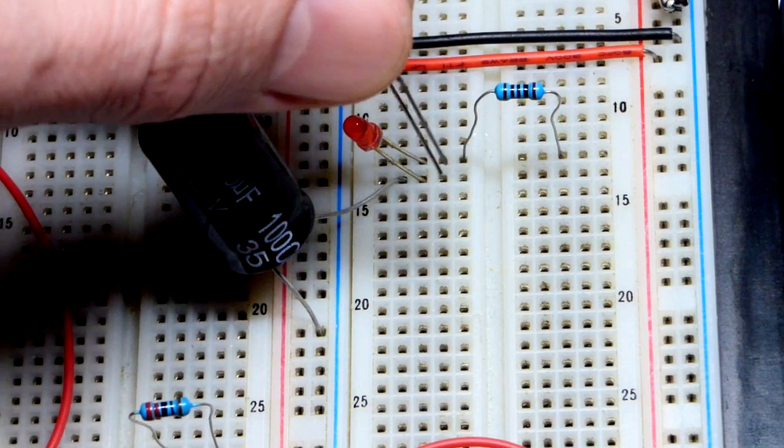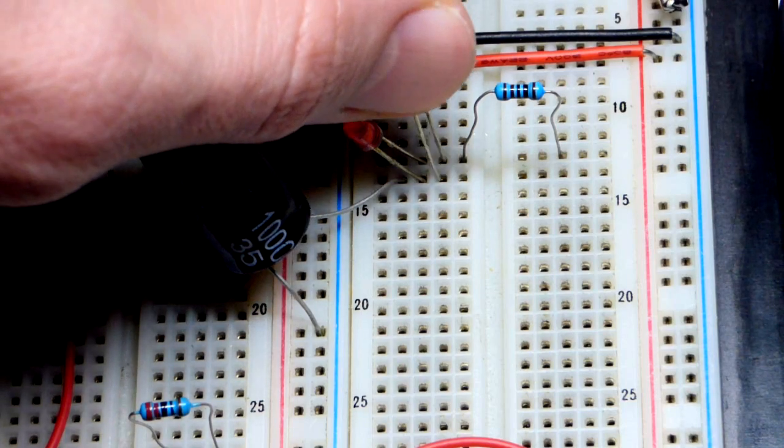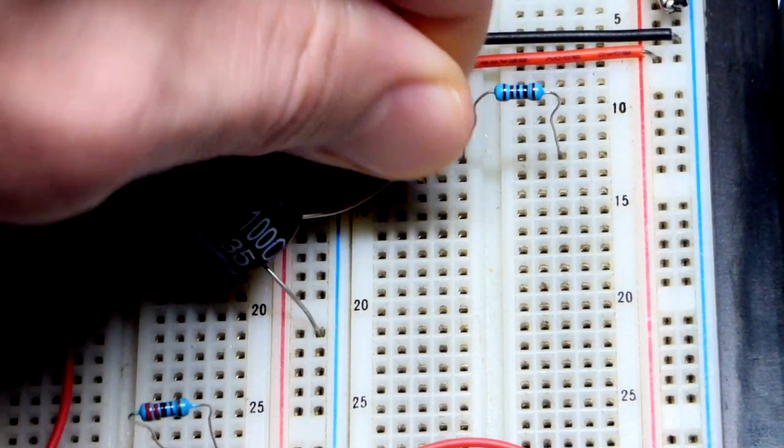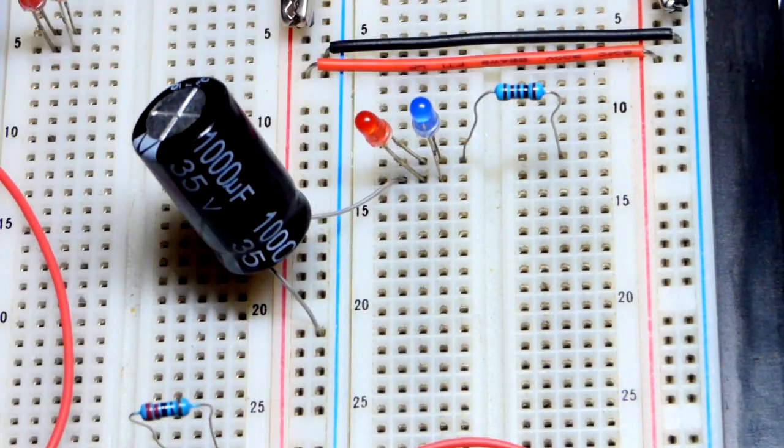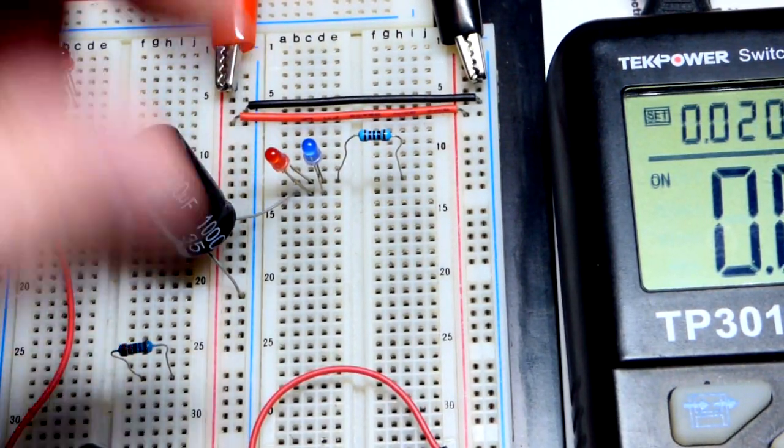With the blue LED, we want it wired in the opposite direction. Long lead, the anode, to the capacitor, short lead, the cathode, to the 1 kilo ohm resistor. We want it to light up when the capacitor is more negative, right there.